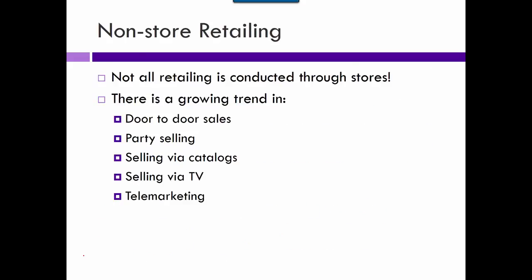There's also non-store retailing: door-to-door sales, party selling like 31 parties or Stella & Dot jewelry parties — those are actually really successful because people feel obligated to buy something because their friend's having a party. Selling via catalogs — a lot of times people don't buy from the catalogs, but the catalog stimulates an online purchase. Companies still send them because people look at the catalog and then go online to purchase it.